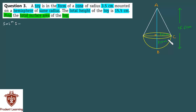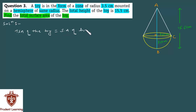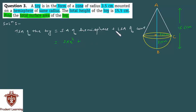The total surface area of the toy equals the surface area of the hemisphere plus the lateral surface area of the cone. The surface area of a hemisphere is 2πr² and the lateral surface area of a cone is πrl.